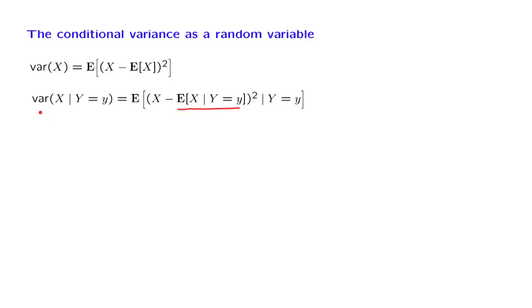So this is nothing but the ordinary variance, but it's the variance of the conditional distribution of the random variable capital X. This is an equality between numbers. If I tell you the value of little y, the conditional variance is defined by this particular quantity, which is a number.